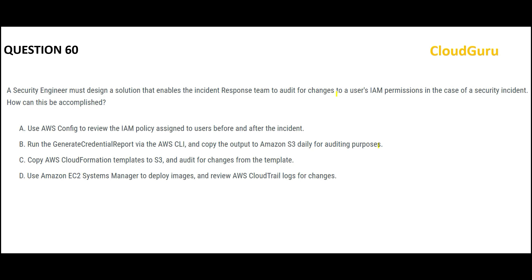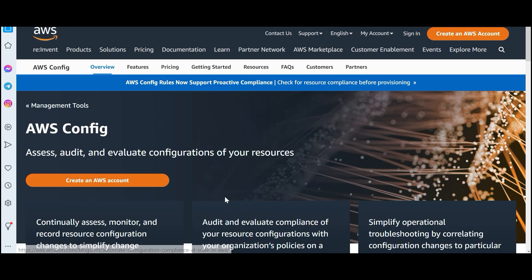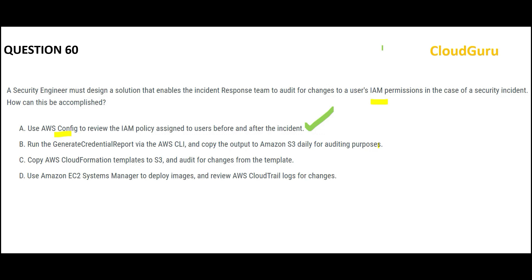Now the next question: an incident has happened and you want to know what the IAM permission access was before and after the incident — whether it caused it. Whenever you want to know before-and-after configuration changes or permission changes, you use AWS Config. Config will hold all changes — whatever is happening to the configuration or any permissions on IAM being added or removed — so you can use it for audit purposes. Option A with AWS Config looks to be the potential answer.